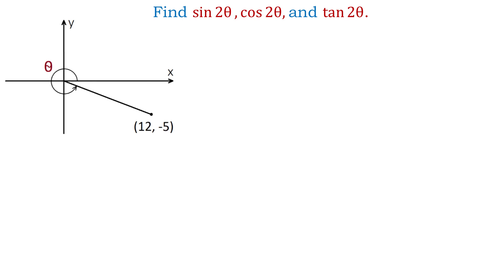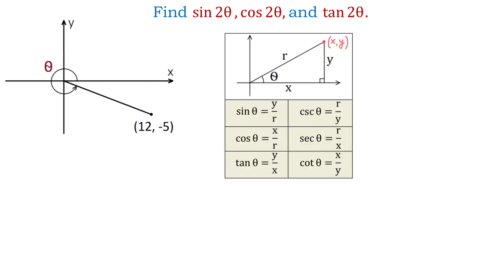To find the values of these expressions, we will use the double angle formulas for sine, cosine, and tangent. But first, let's review the definitions of trigonometric functions. If we have a point with the coordinates x and y, and if from this point we draw a perpendicular to the x-axis, then we will form a right triangle.